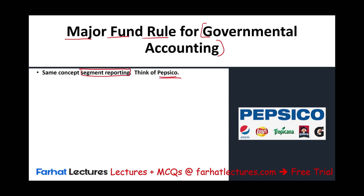Think about a company like PepsiCo. PepsiCo owns other companies or operates other products separately from their beverage company. Their beverage company is one segment; they also have Lays, Tropicana, Quaker, and Gatorade. As long as these companies meet certain conditions, their operations will be reported separately because it gives the user a better understanding of the overall position of PepsiCo.